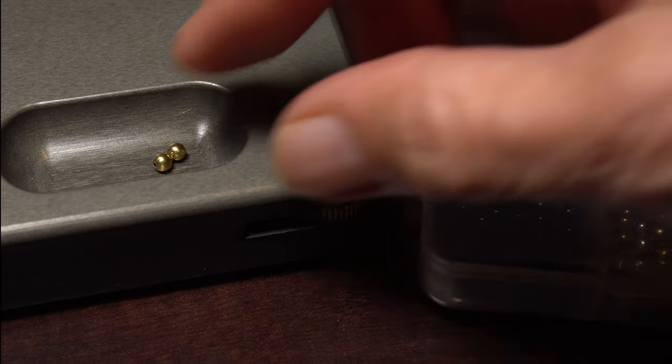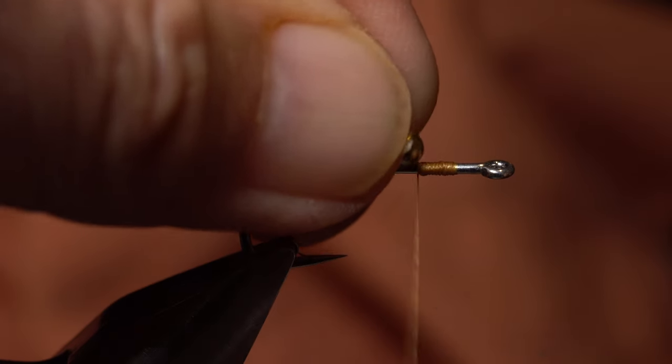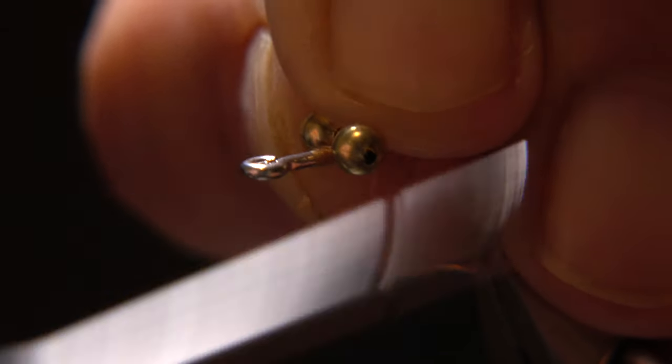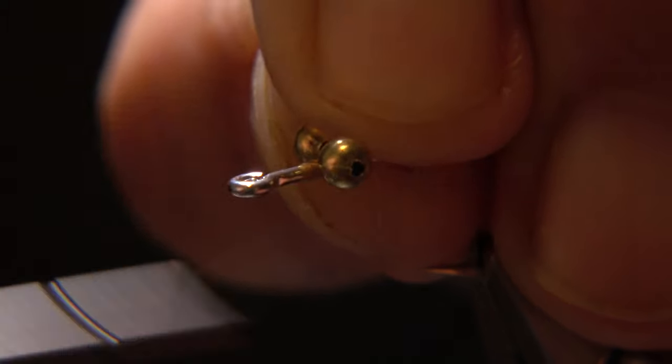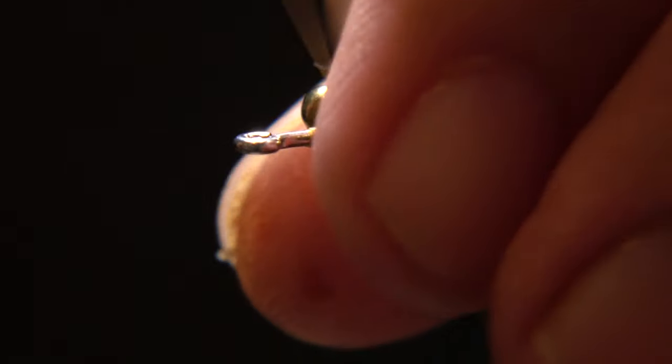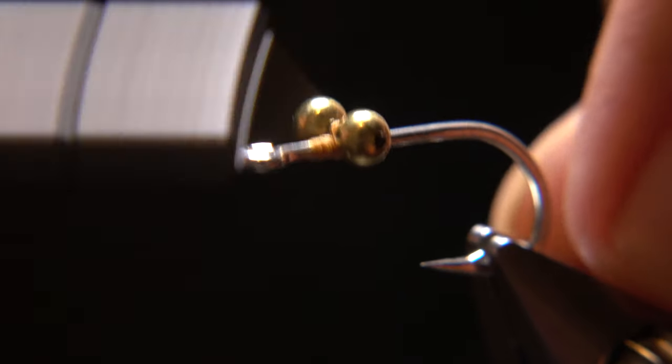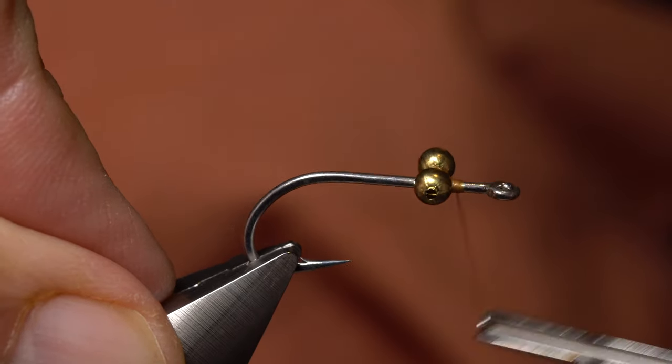Medium-sized gold bead chain is used to represent eyes and to add a little weight to help the fly sink. Secure the bead chain perpendicular to the hook shank at about the midpoint of the thread landing base. Everybody seems to have their own wrapping sequence for tying in eyes. Whatever you do, be sure they're locked down really well. Peter uses roughly 40 wraps of tying thread.